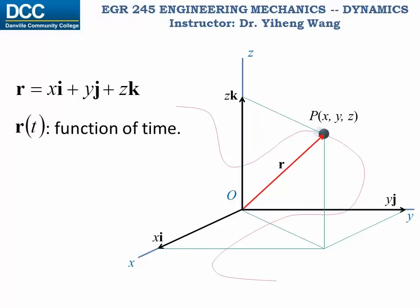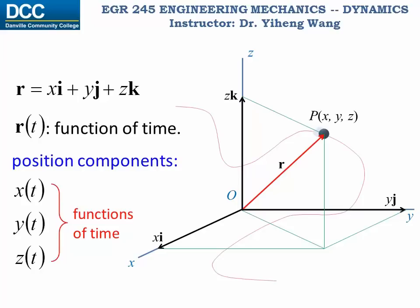And the x, y, and z components of the position vector r represent the positions along the x, y, and z directions respectively, and they are also functions of time.